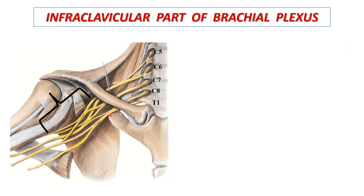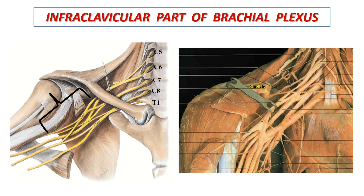Coming to the composition of the infraclavicular part of the brachial plexus: here is the clavicle, and here is the axillary artery within the axilla. The infraclavicular part is composed of all three cords and their branches of the brachial plexus. This means the divisions of the brachial plexus lie deep to the clavicle.